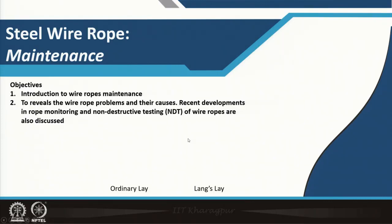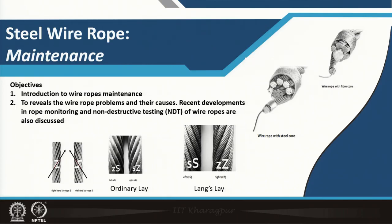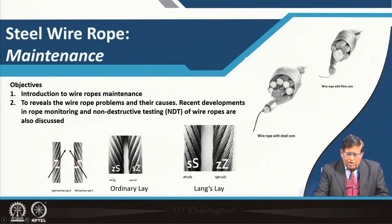The objectives of today's lecture are to introduce wire rope maintenance, to reveal wire rope problems and their causes, and to discuss recent developments in non-destructive testing of ropes. To refresh: wire ropes are constructed with either fiber core rope or steel core rope. We also know about right-hand lay and left-hand lay ropes, and depending on how the wires and strands are laid, we have ordinary lay and lang's lay.